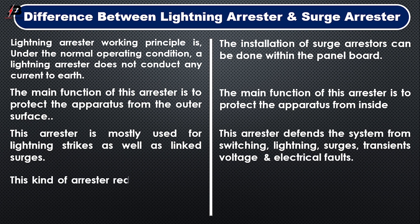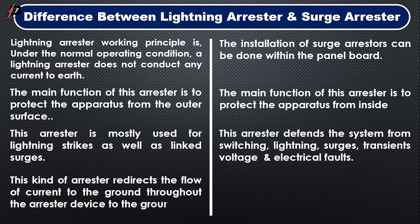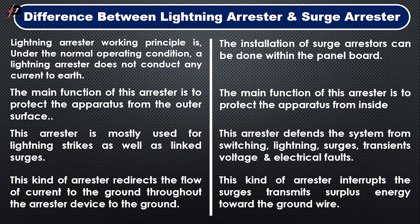These kinds of arresters — I mean lightning arresters — redirect the flow of current to the ground throughout the arrester device. These kinds — I mean surge arresters — interrupt the surge transmission, directing surplus energy toward the ground wire.